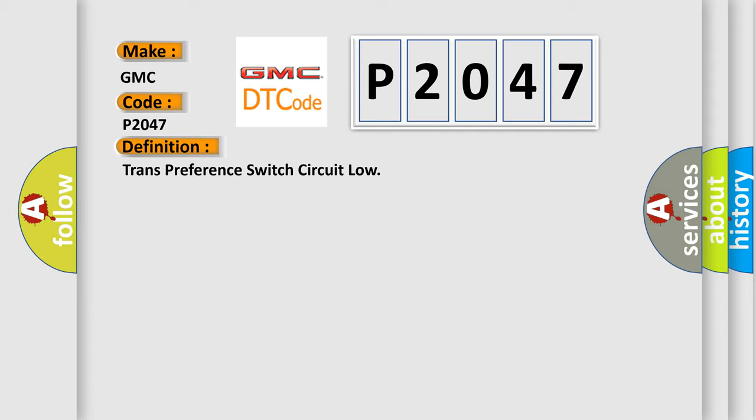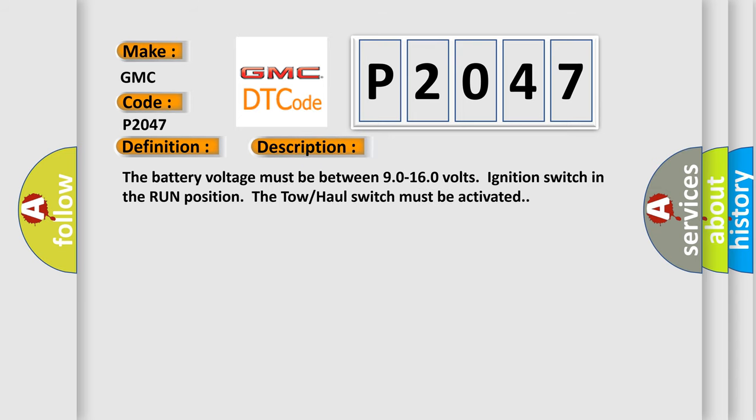And now this is a short description of this DTC code. The battery voltage must be between 9.0 to 16.0 volts, ignition switch in the run position. The tow-haul switch must be activated.